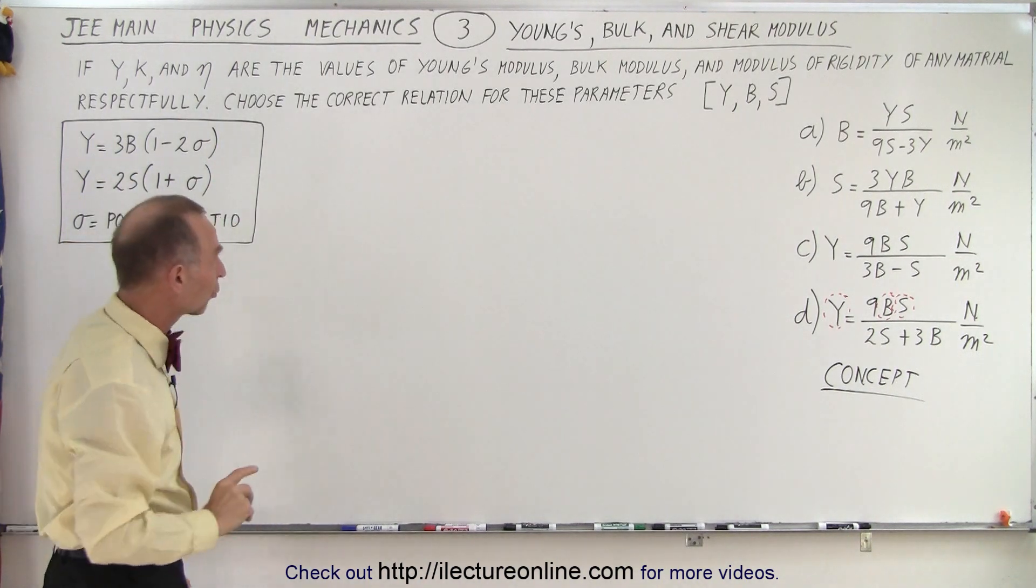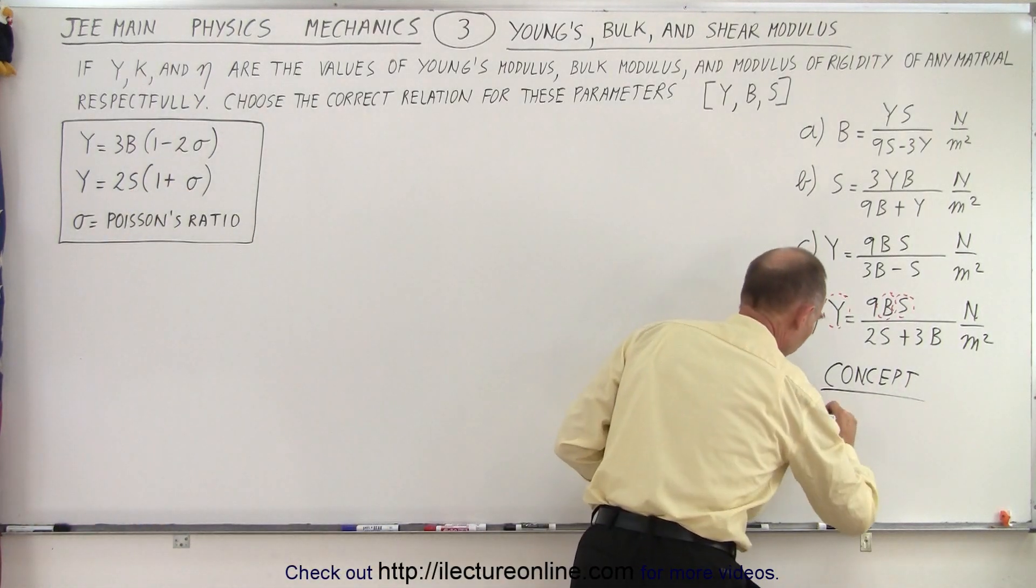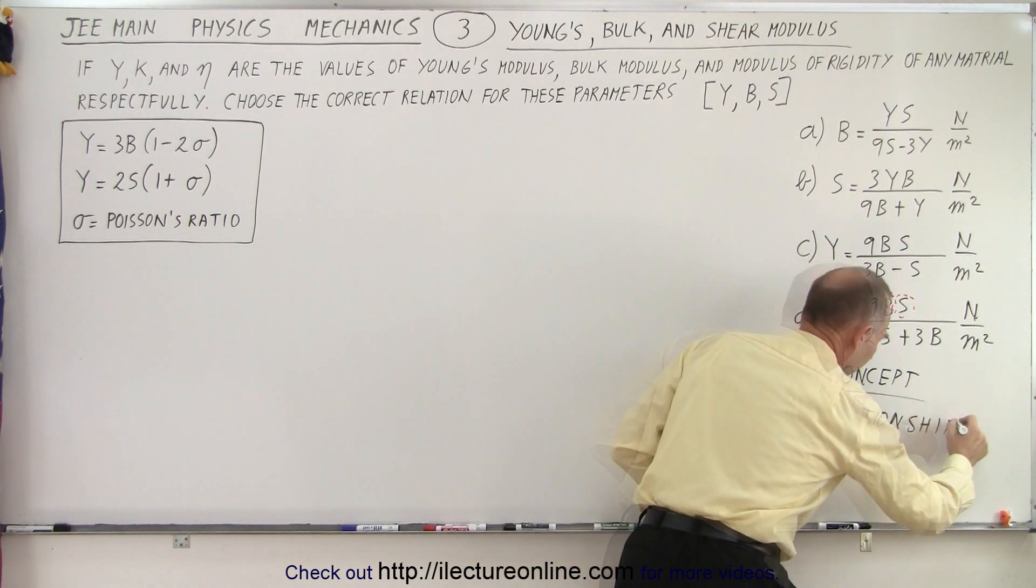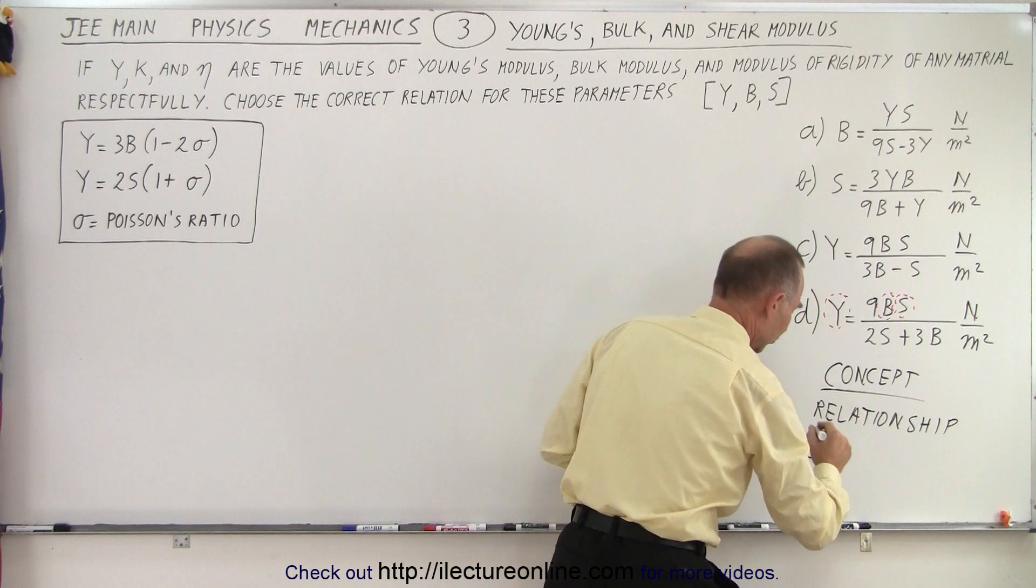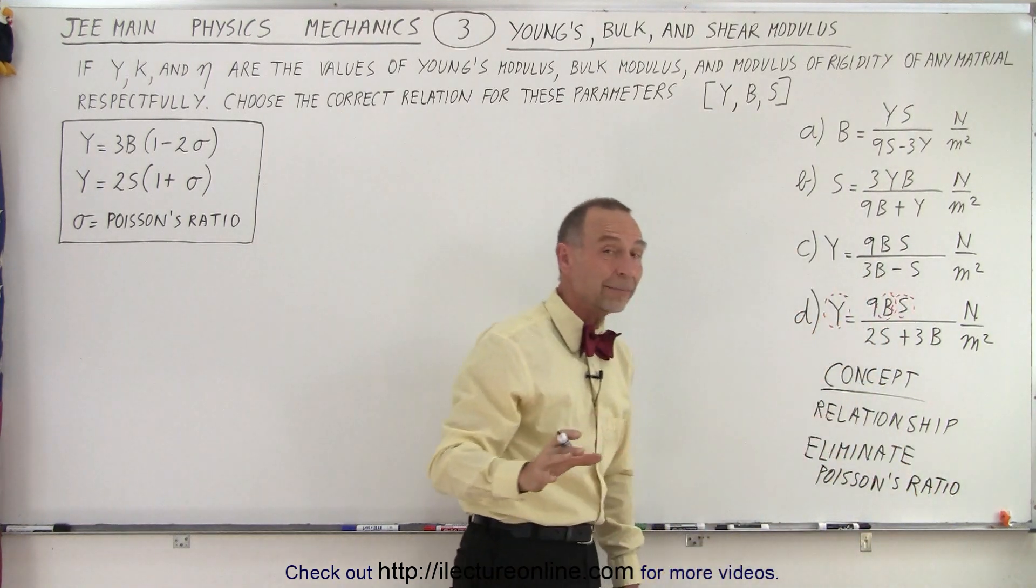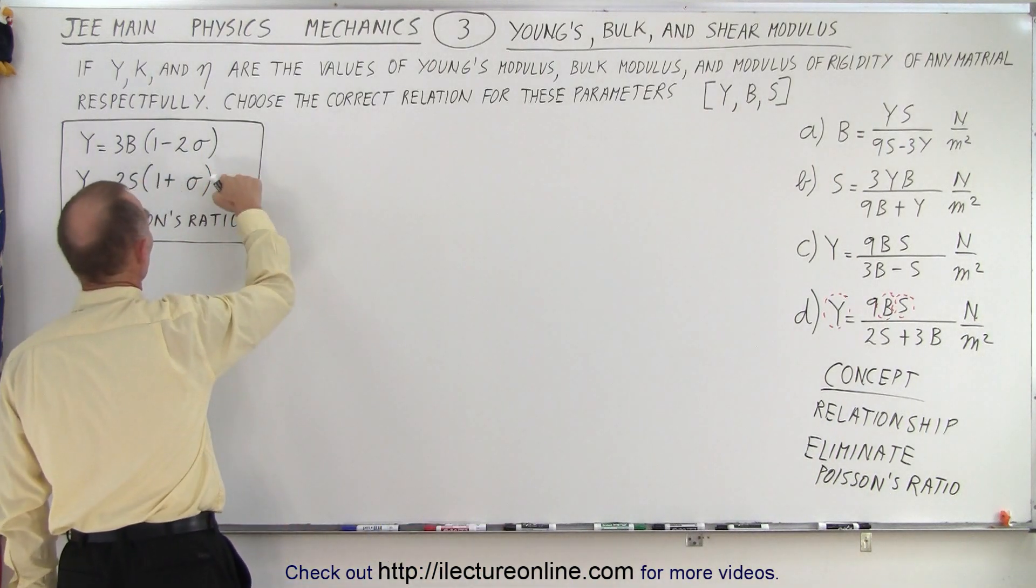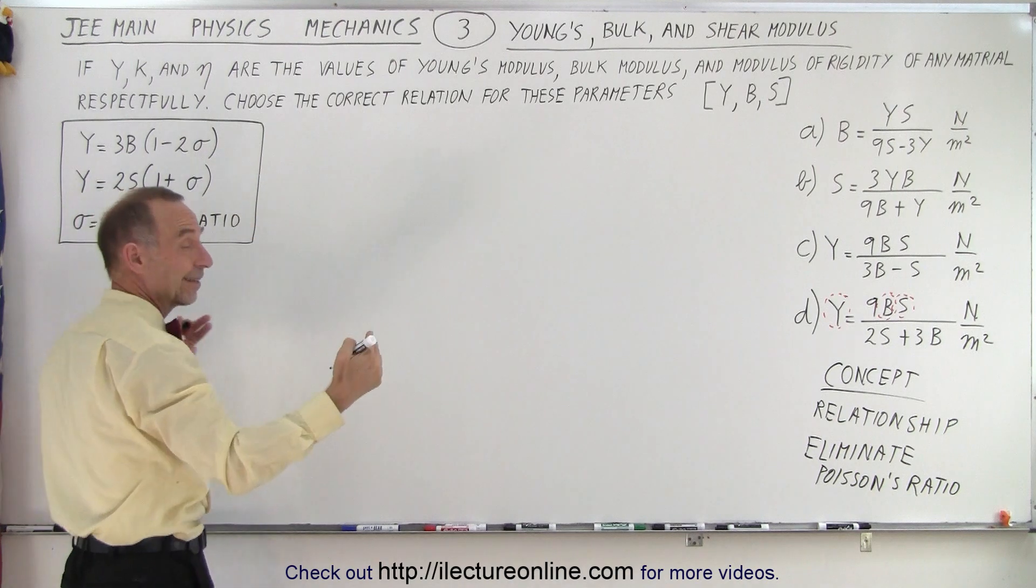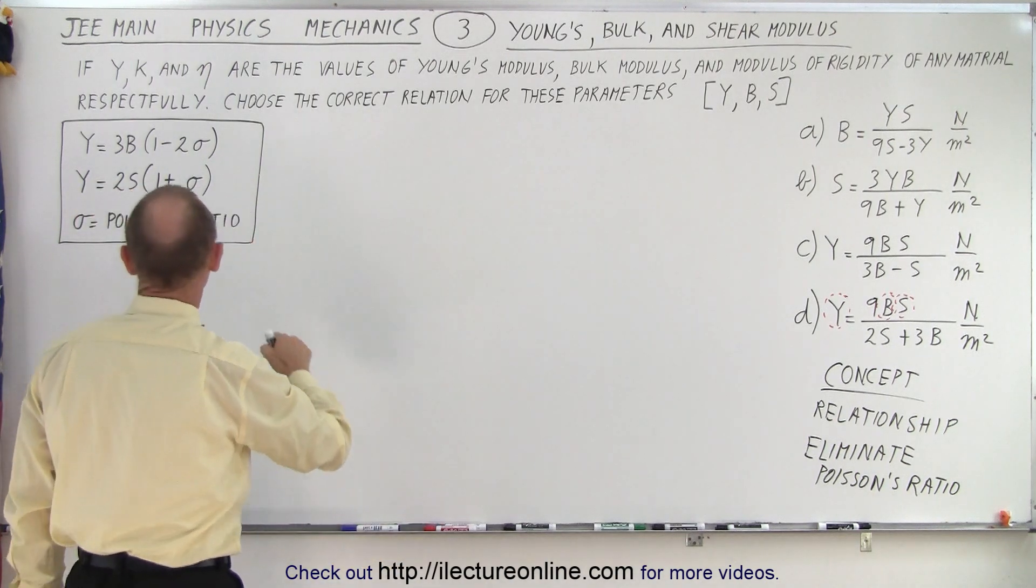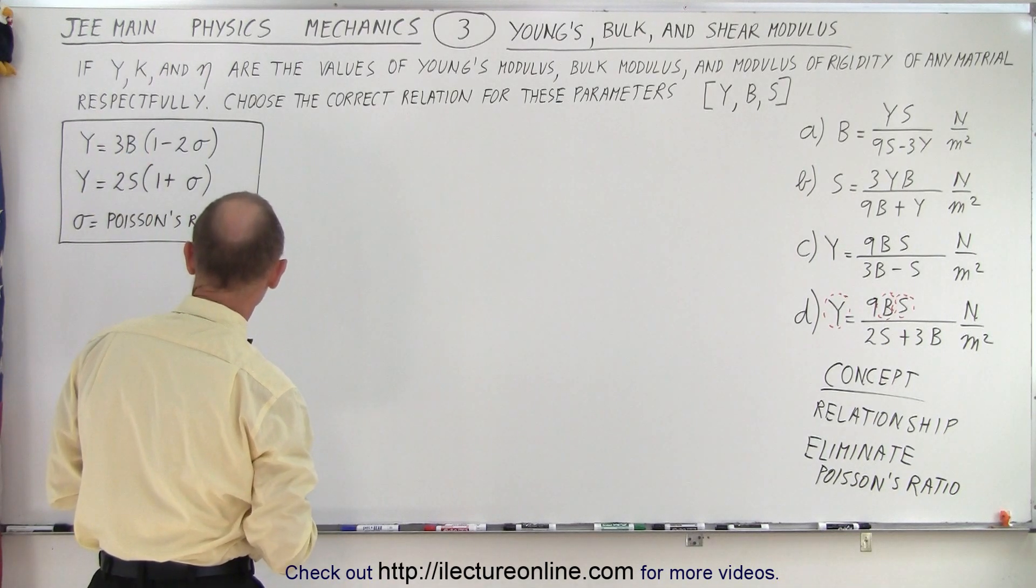So if you want to eliminate Poisson's ratio, the concept is to find the relationship. So we're going to find the relationship between these. And we need to eliminate Poisson's ratio. So there's the concept, and there's also the strategy to do that. So what we're going to do is we're going to solve each of those equations for Poisson's ratio, and set them equal to each other to eliminate Poisson's ratio, and then we'll have a relationship between the three, Young's, the bulk, and the shear modulus.